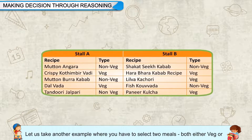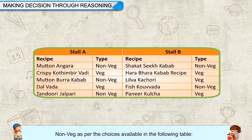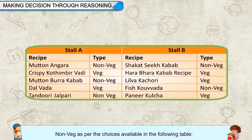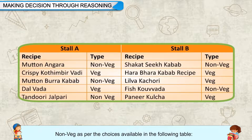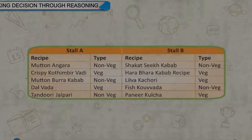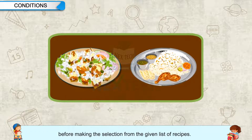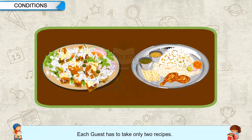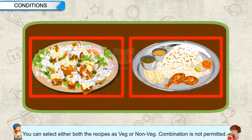Let us take another example where you have to select two meals, both either veg or non-veg, from choices available at Stall A and Stall B. The table includes items like Mutton Angara (non-veg), Shakat Seekh Kebab (non-veg), Crispy Kothimbir Vadi (veg), Harabhara Kebab (veg), Mutton Burra Kebab (non-veg), Lilwa Kachori (veg), Dal Vada (veg), Fish Kuwada (non-veg), Tandoori Jalpari (non-veg), and Paneer Kulcha (veg). Rules: each guest takes only two recipes; one from each stall is compulsory; both recipes must be either veg or non-veg; combination is not permitted.